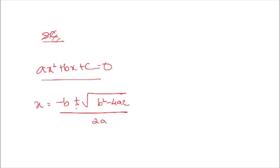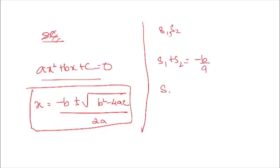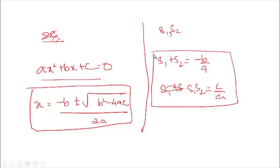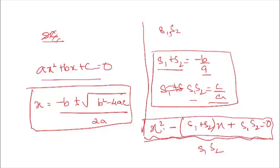Some more important facts: if s1 and s2 are the two solutions of the equation, then the sum of the solutions is s1 + s2 = −b/a, and the product is s1 × s2 = c/a. Using these, if you know the solutions, you can form the equation as: x² − (sum of roots)x + (product of roots) = 0. This is the most important formula we will use to solve problems easily.